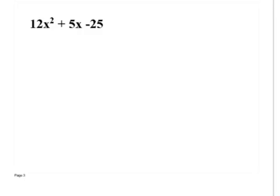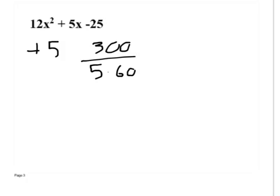Next problem. What adds to give 5 and multiplies to give 12 times 25, which is negative 300? Try 5 and 60 — that gives 300 but they don't subtract to give positive 5. Try 30 and 10 — do they subtract to give 5? You're thinking in the right direction. Try 15.